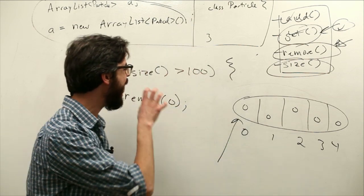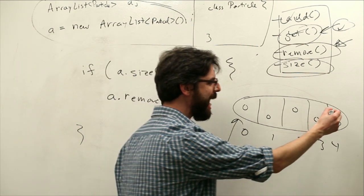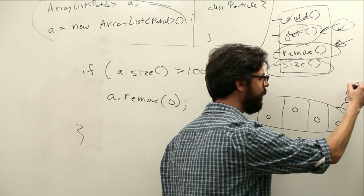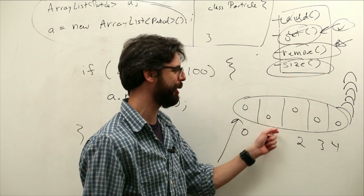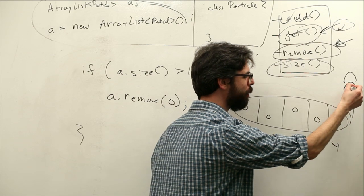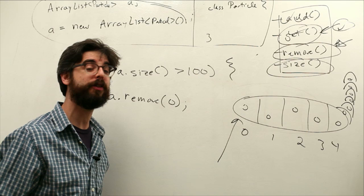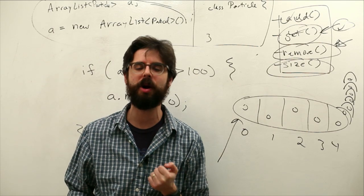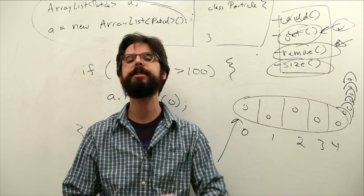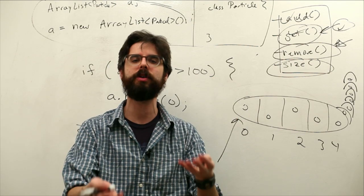In this case what I'm going to do is say remove 0. I want to remove that first element from the ArrayList. Why? Because when you add elements to the ArrayList, they get tacked on to the end. You can see this ArrayList drawing is expanding with slots for particles. It gets bigger and bigger each time we add one. If we take away the first one, that's the oldest particle.